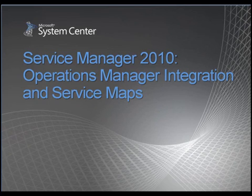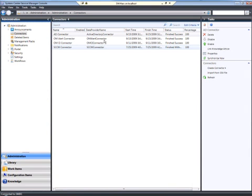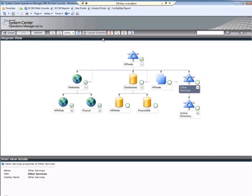Today in this demonstration I'm going to show you how Service Manager integrates with Operations Manager by creating incidents from alerts, as well as creating configuration items and services from objects discovered by Operations Manager. Here you see the Service Manager console in the Administration Workspace under Connectors. There are two connectors set up to sync with Operations Manager: an Operations Manager Alert Connector and an Operations Manager CI connector.